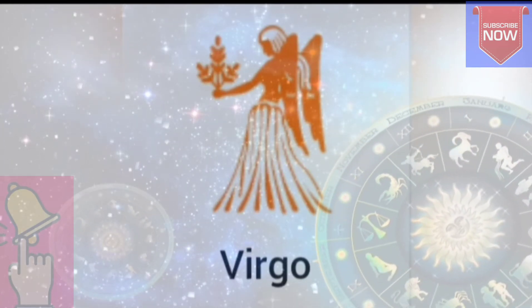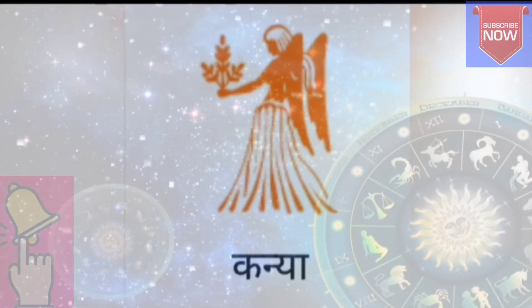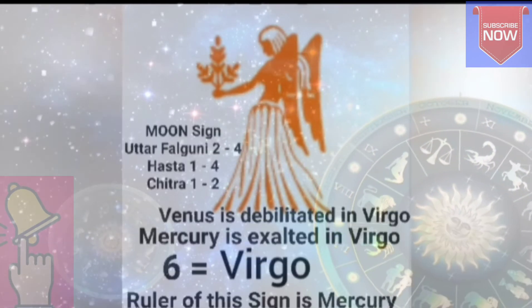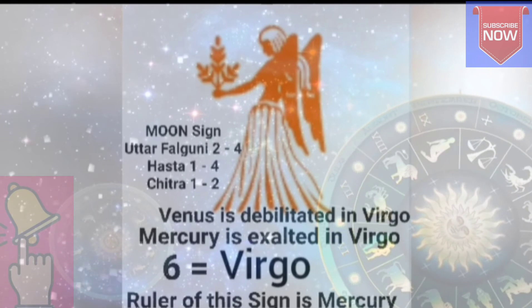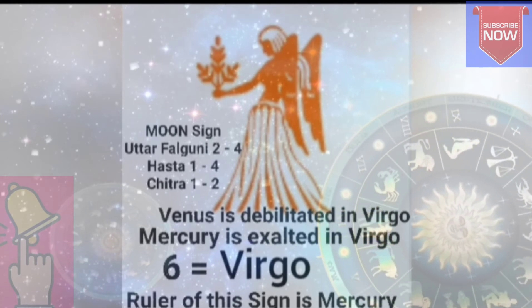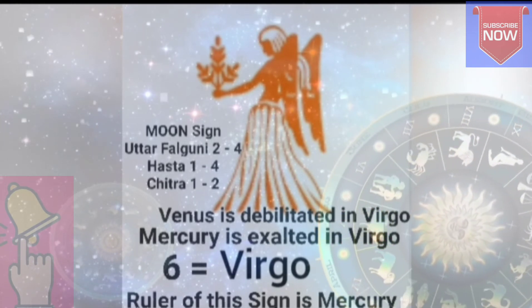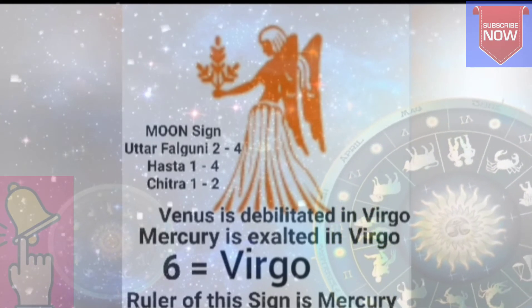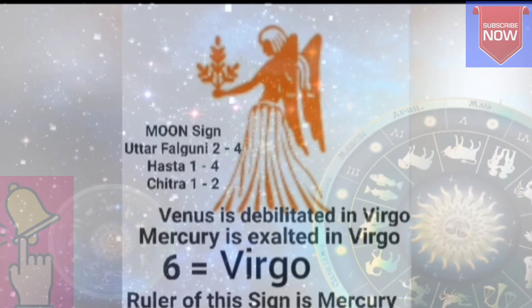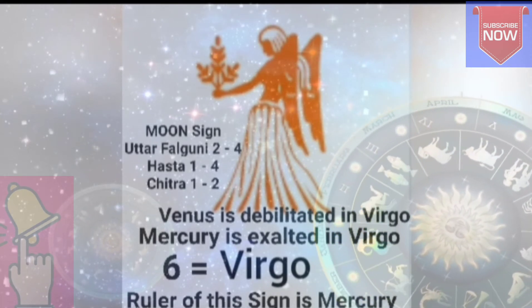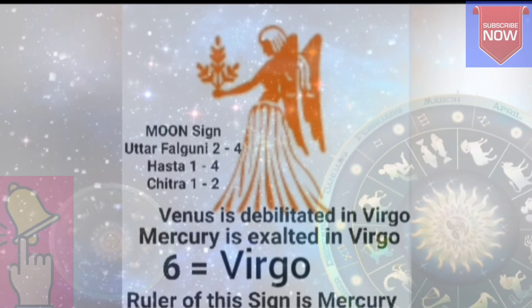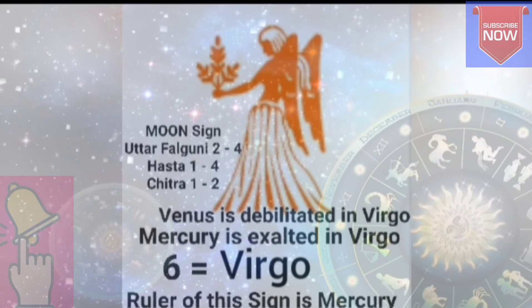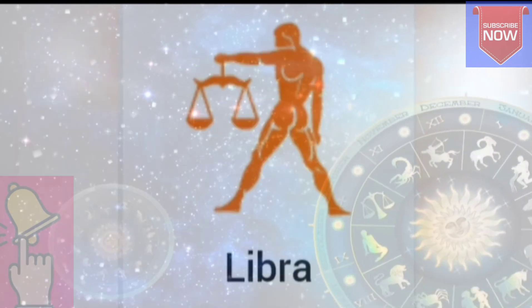Virgo, number 6, is called Kanya in Hindi. This Rashi is ruled by Mercury. Venus is debilitated in Virgo and Mercury is exalted in Virgo. The nakshatras are: Uttara Phalguni 2, 3, and 4 Pada, Hasta 1, 2, 3, and 4 Pada, and Chitra 1 and 2 Pada.